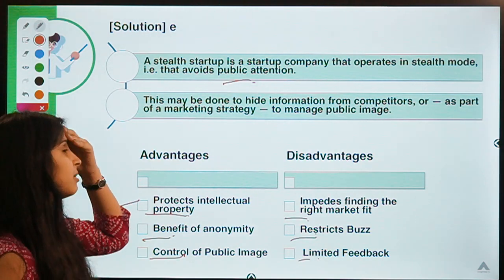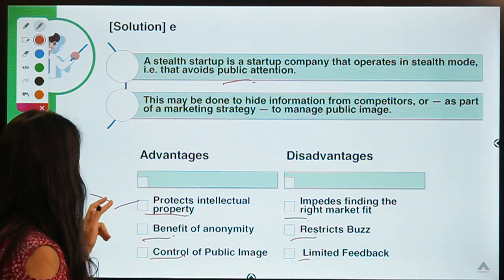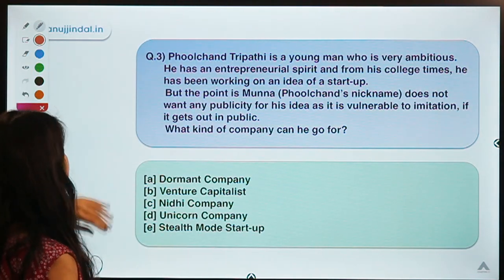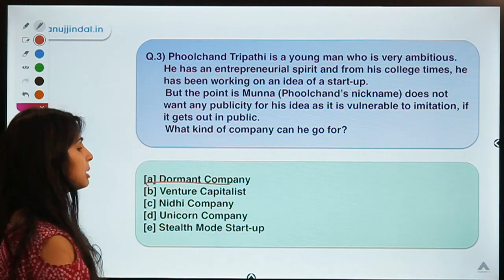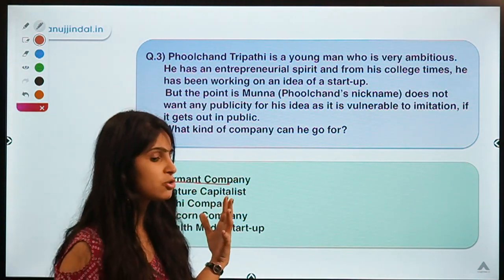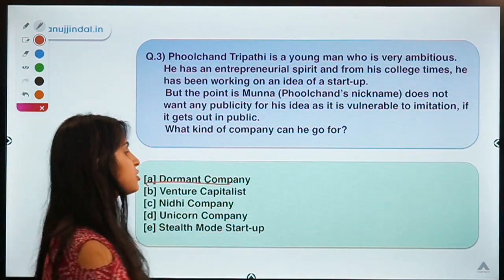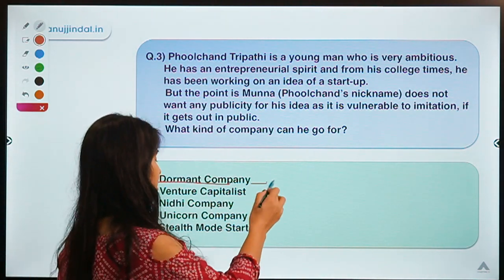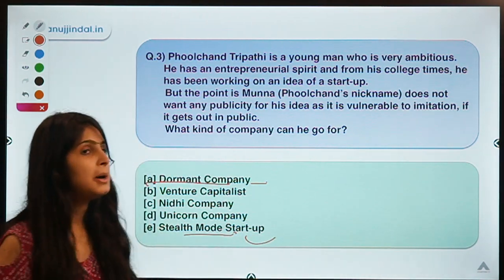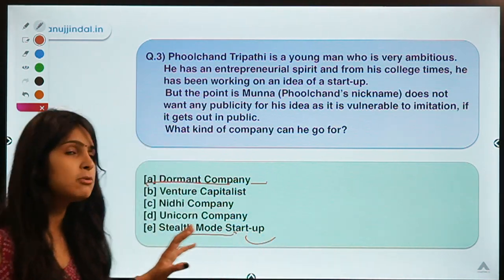This came from a doubt someone raised: the difference between a stealth mode startup and a dormant company. A dormant company is one that is not carrying out any operations of a normal company — it's not operational. A stealth mode startup, on the other hand, IS operational but is kept secret. That is the key difference.